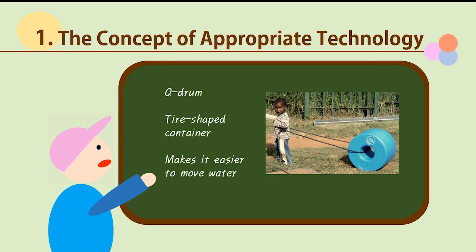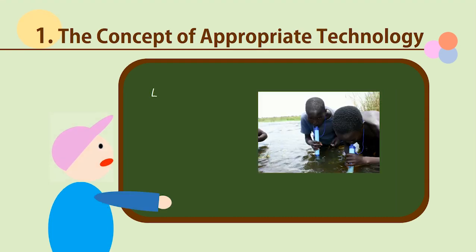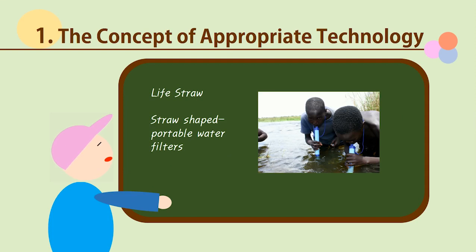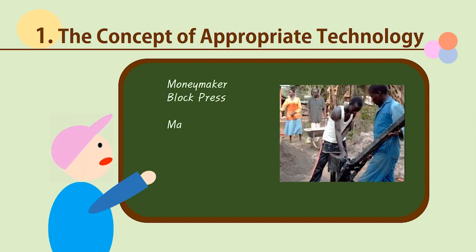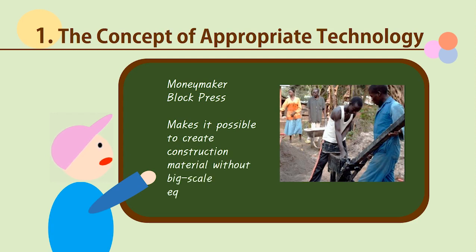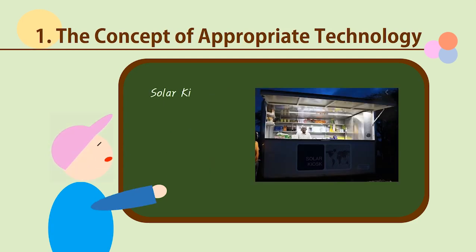This Q-Drum is a tire-shaped container that makes it easier to move water. The life straws in these pictures are straw-shaped filters that make water drinkable. This moneymaker block press makes it possible to create construction material without big-scale industrial equipment. Last but not least, this solar kiosk runs on solar energy, solving the problem of insufficient electric infrastructure.